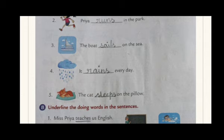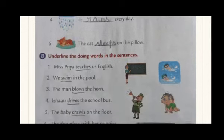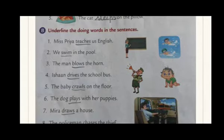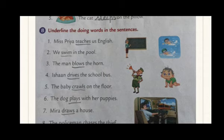Now let's look at Exercise B. The instruction is: underline the doing words in the sentences. First question — Miss Priya teaches us English. What is she doing? Teach. Why are we writing teaches? Because we are talking in third person. Whenever an action word ends with a hissing sound — like CH — you have to add ES instead of S. So teaches is the doing word here. Underline it.